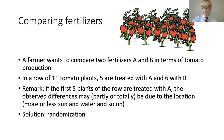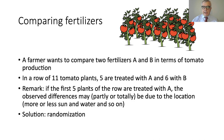It could seem natural to take the first five plants and treat them with A, and the remaining six with B. But then the observed difference might not be due to the fertilizers at all — it could just be due to position. Position in this situation is a confounder, as we have discussed in previous lectures. You could observe a difference and associate it to the fertilizer type, but the real effect was actually due to position.